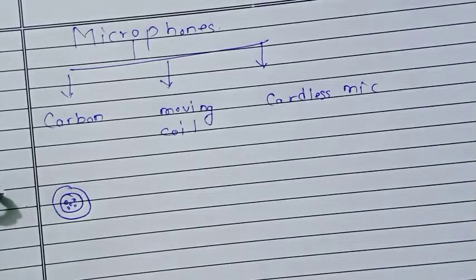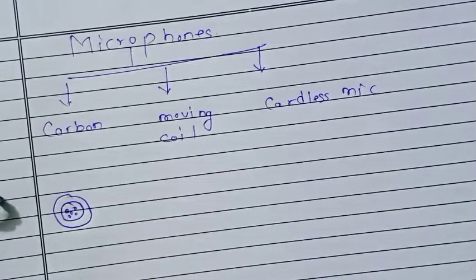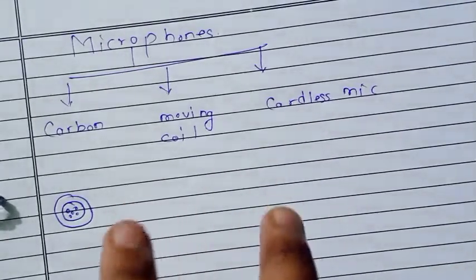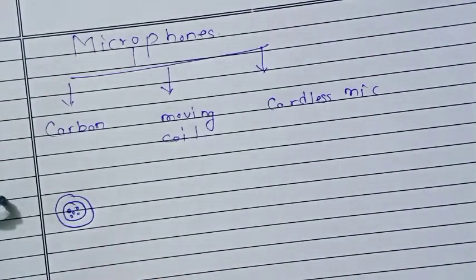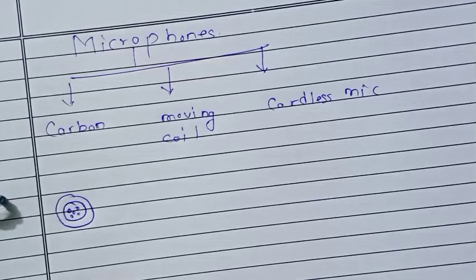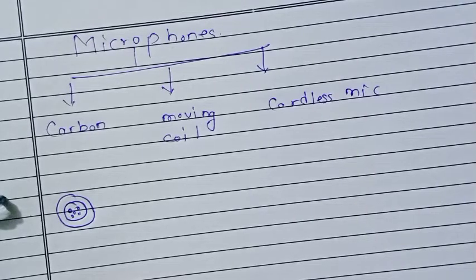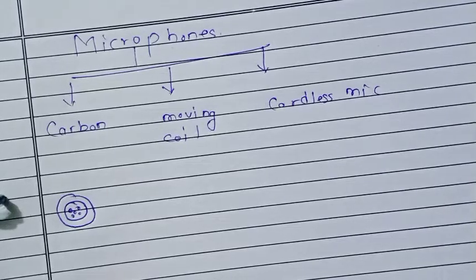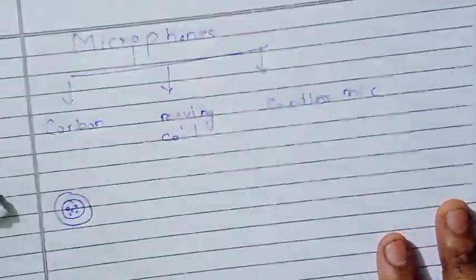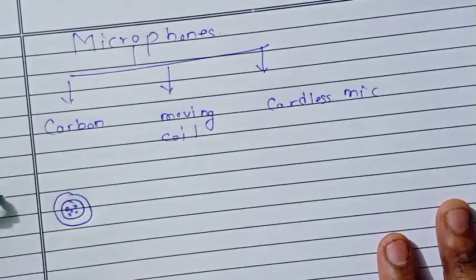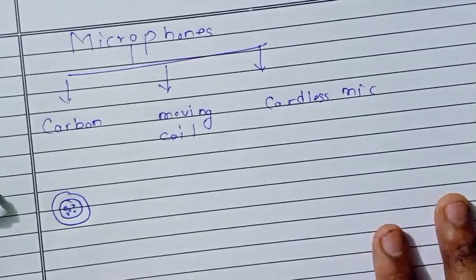When carbon granules are under high pressure, compression occurs. When there is low pressure, rarefaction occurs. In each case, the resistance of the granules is different.